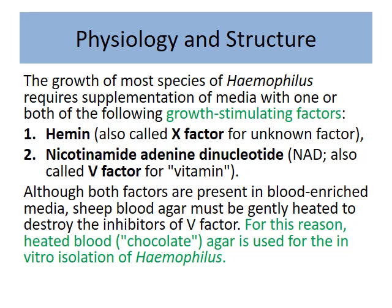To grow Haemophilus we need culture sensitivity testing. We must provide growth-stimulating factors: X factor, which is hemin, and V factor, which is nicotinamide adenine dinucleotide (NAD). If this bacteria were to grow in your system it would consume all of these supplements. We grow this particular bacteria on heated blood agar — called chocolate agar because heating the blood turns it chocolate-colored — and that is the medium required to grow Haemophilus.